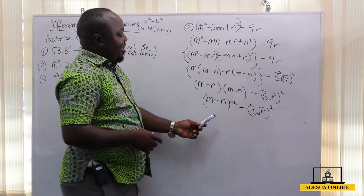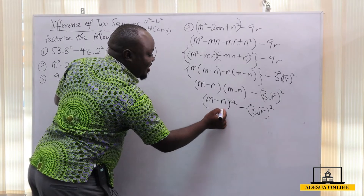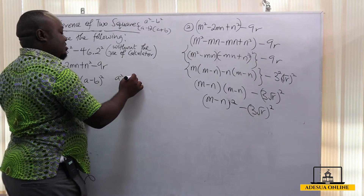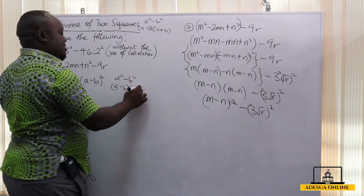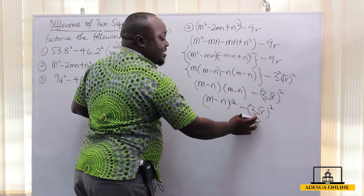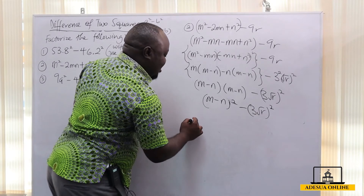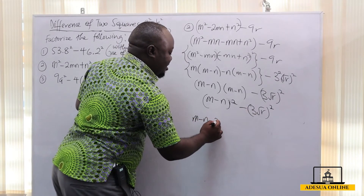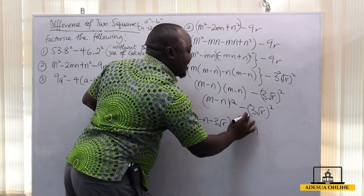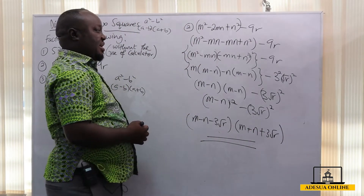Now we have the difference of two squares coming into play. Assuming the whole of (m - n) is my a and the whole of 3√r is my b, we use a² - b² = (a - b)(a + b). So this becomes (m - n - 3√r)(m - n + 3√r). This is our factorized expression.